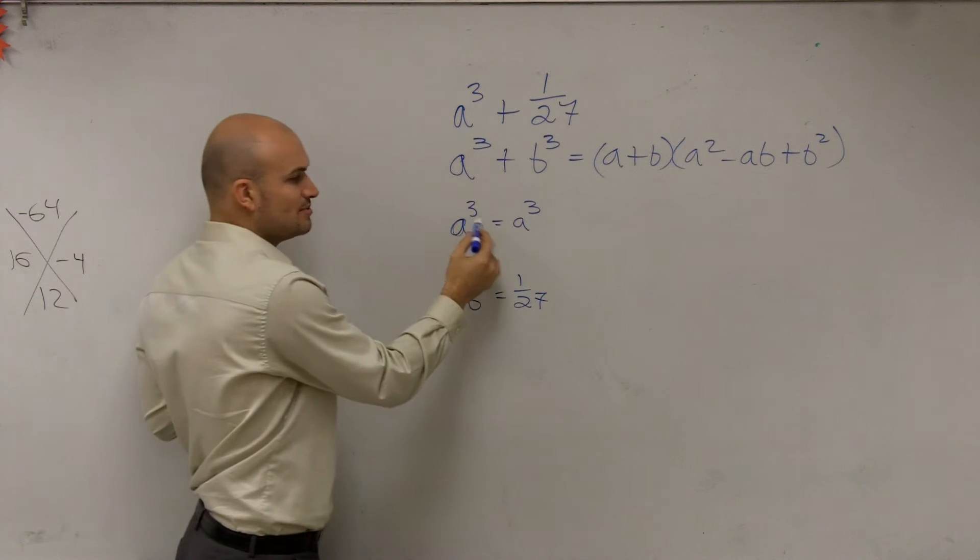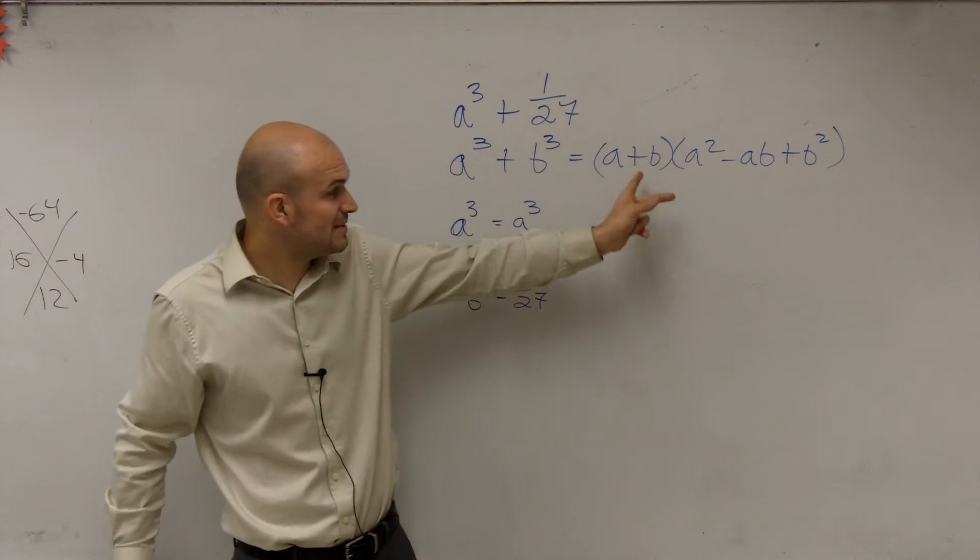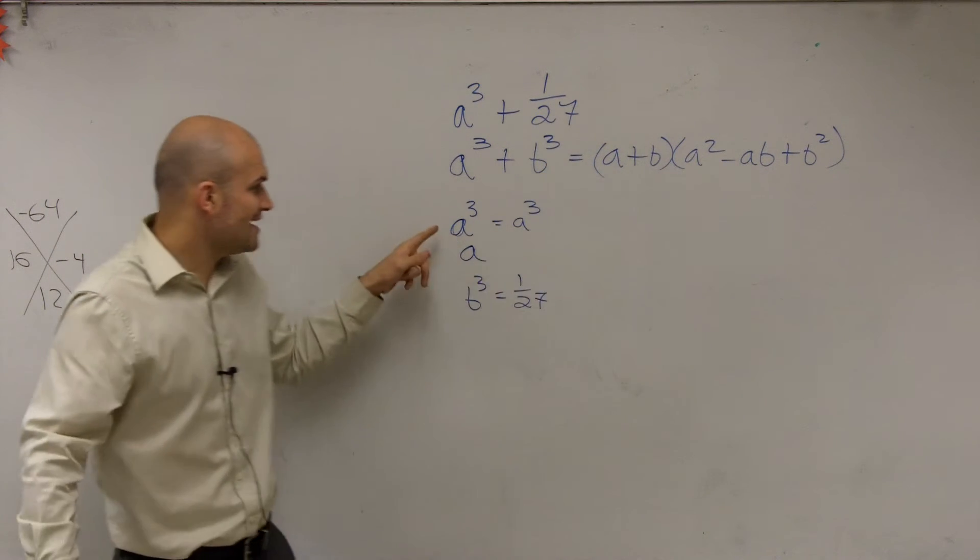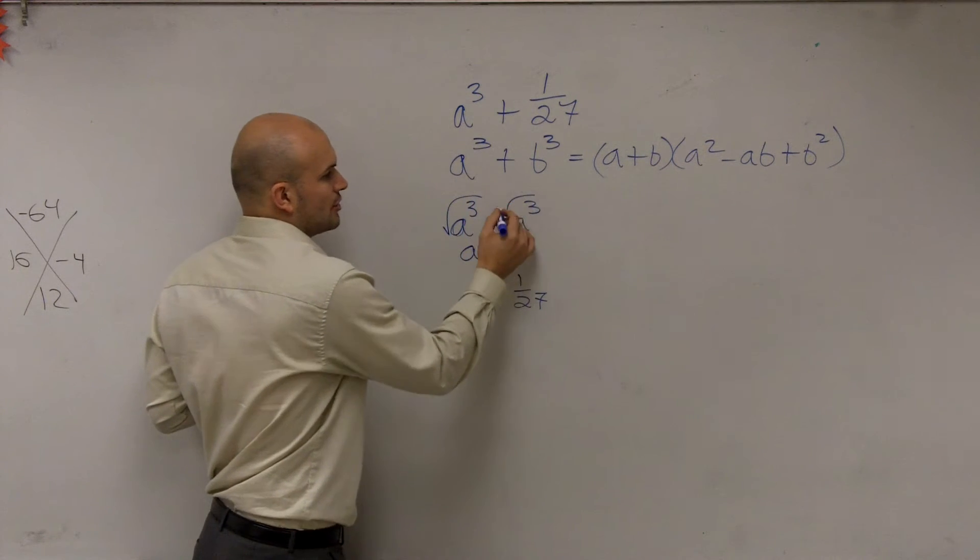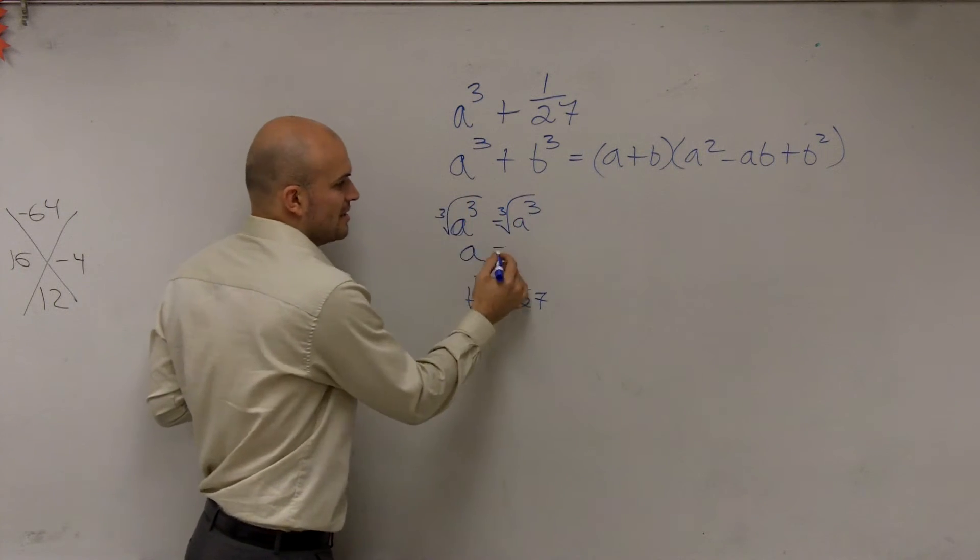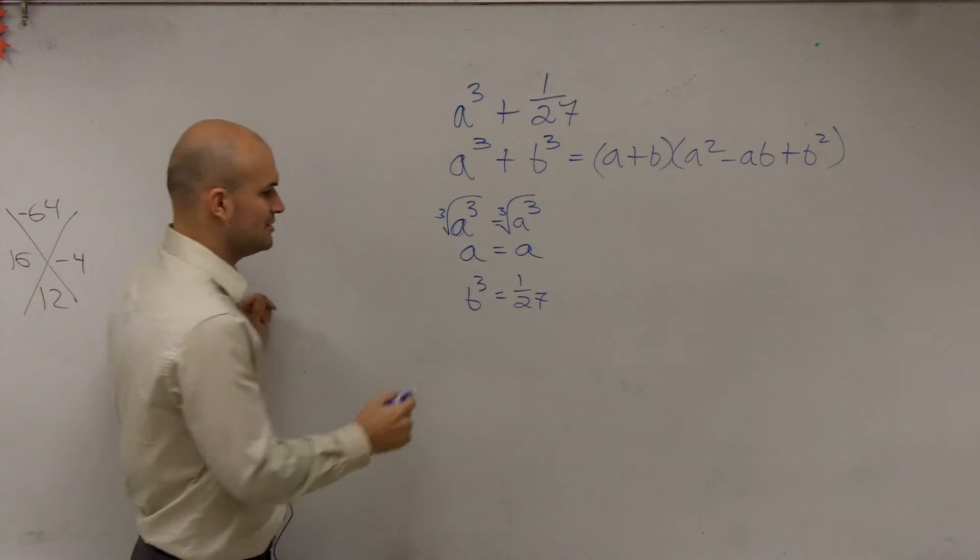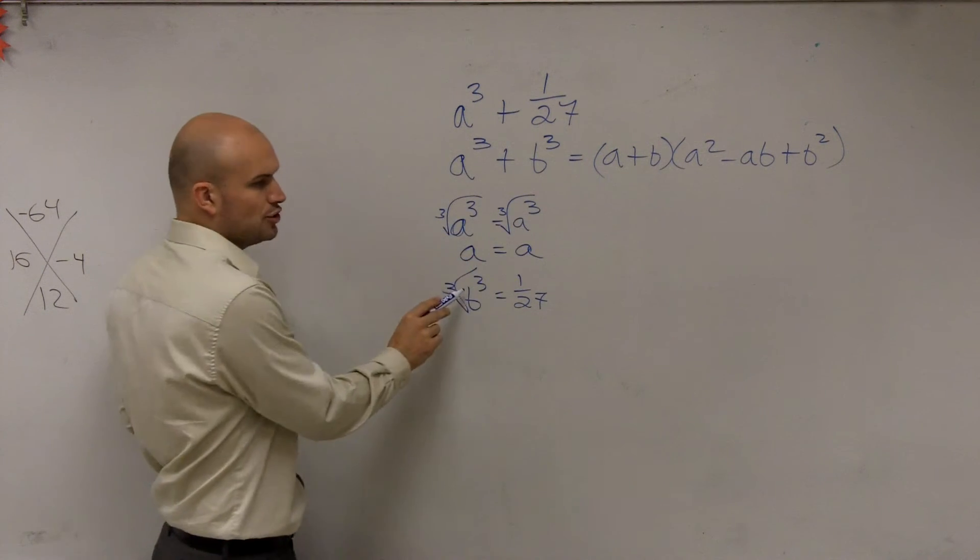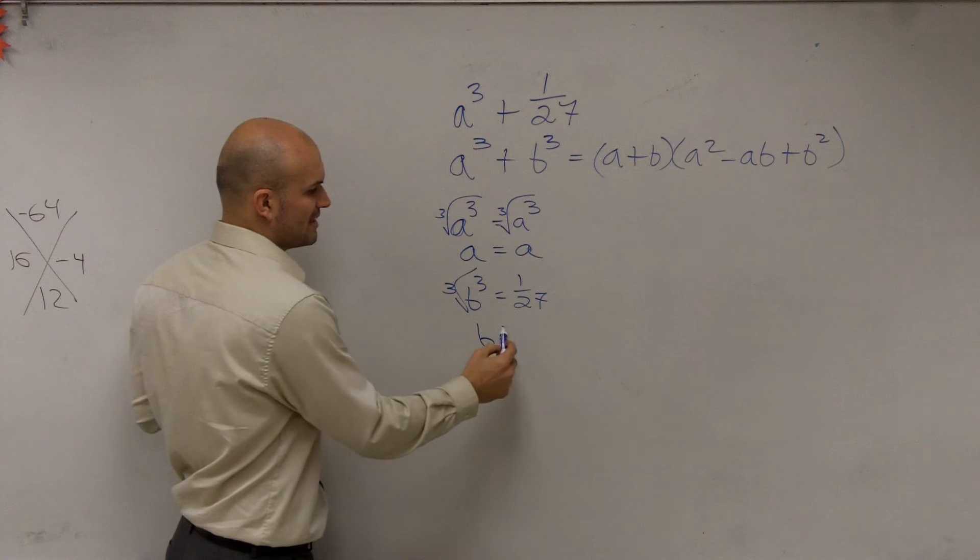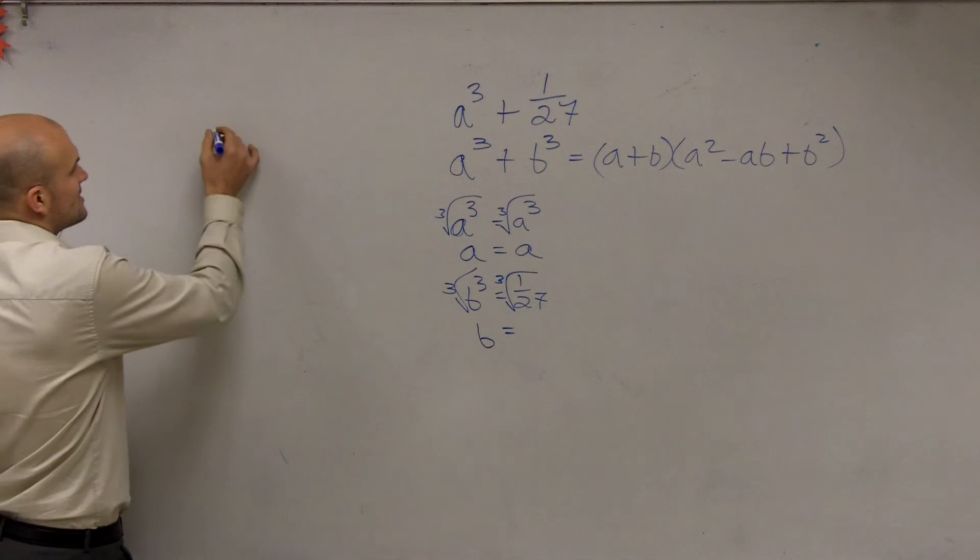We need to figure out what a is. If I have a³, then what's a? To do that, you take the cube root of both sides, and the cube root of a³ is just a. Then I need to take the cube root of b³, which gives me b, and then the cube root of 1 over 27.